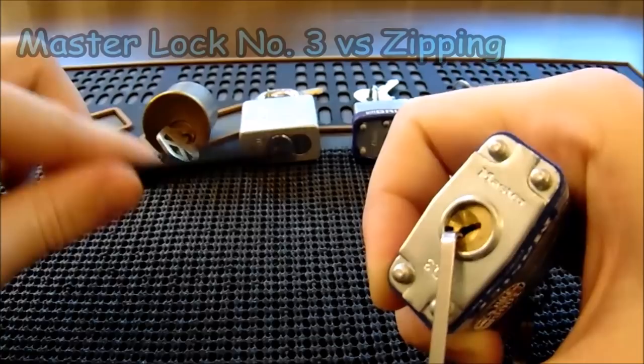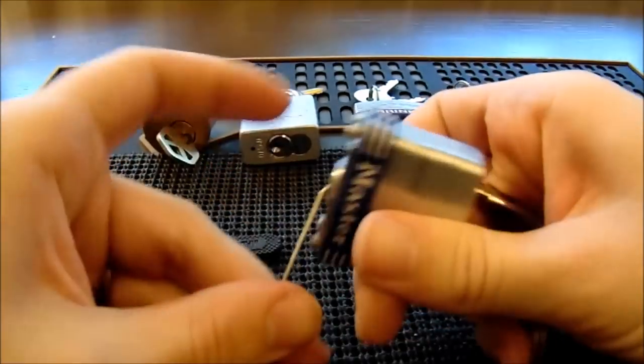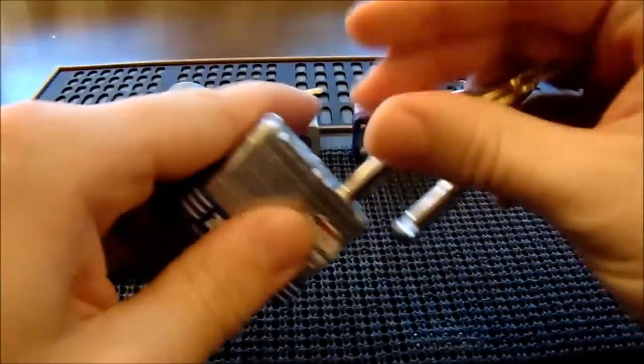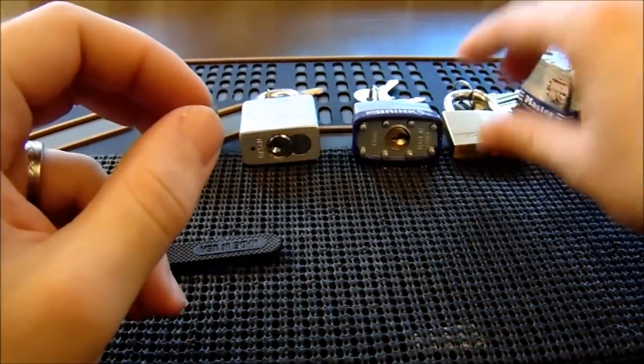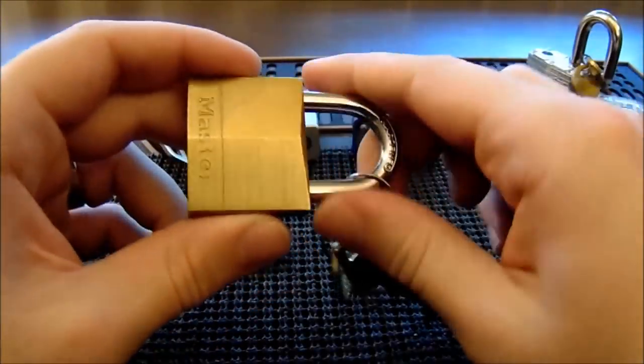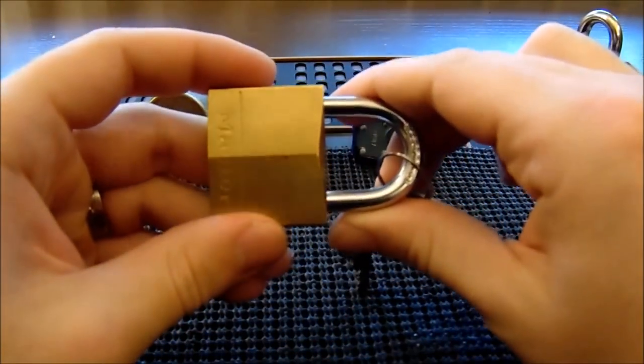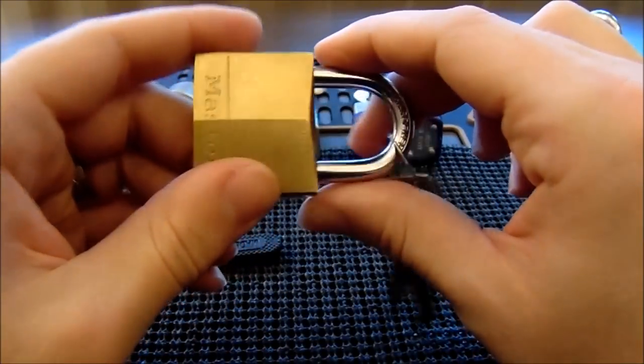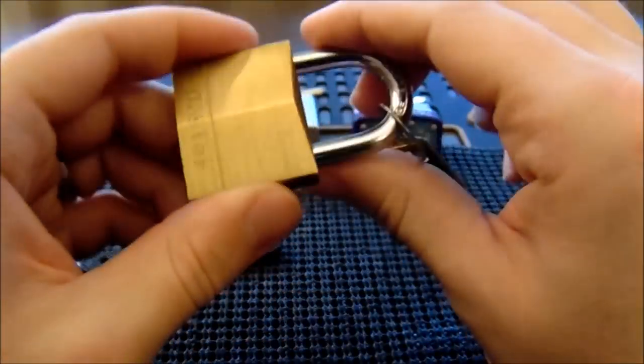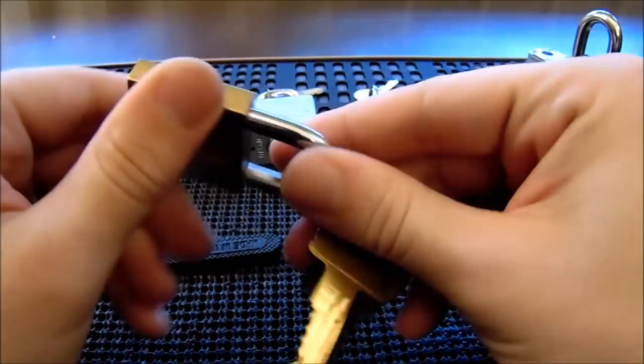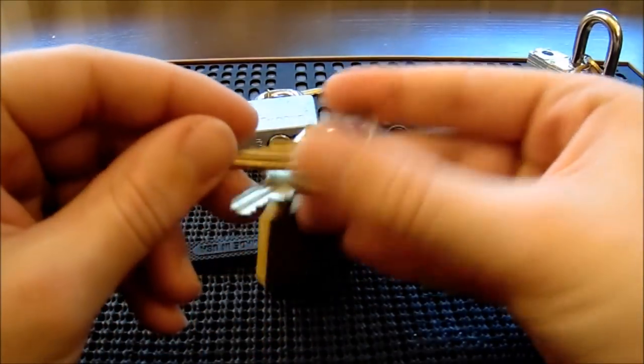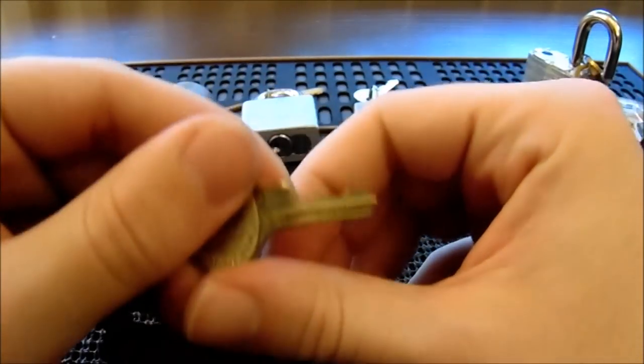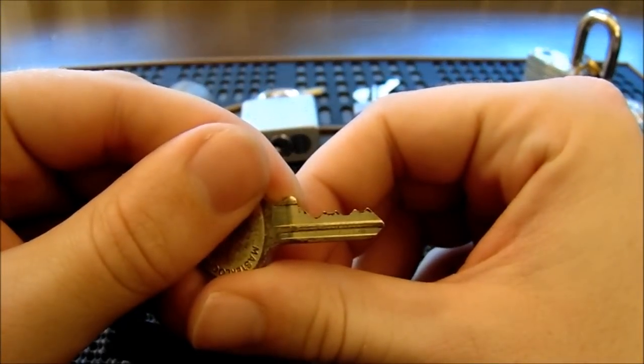You don't always get it on the first try but often you get it pretty quickly. Now the next lock is another Master Lock, it's the model number 140. This is a four pin lock that has some spool pins in it. This one has about one in it, but it doesn't really make too much of a difference because it never really comes into too much play.